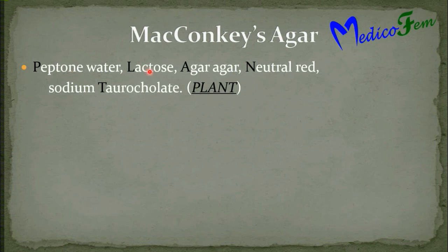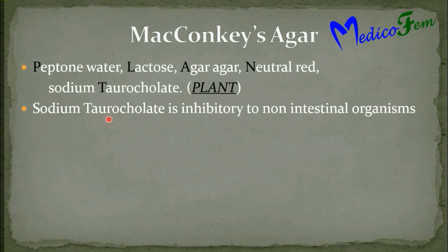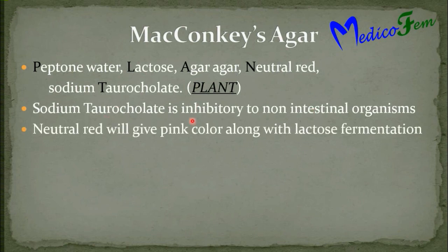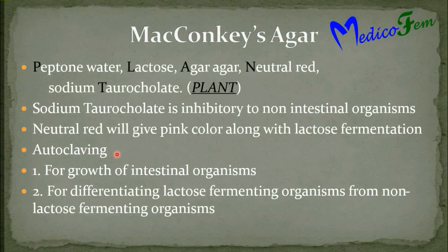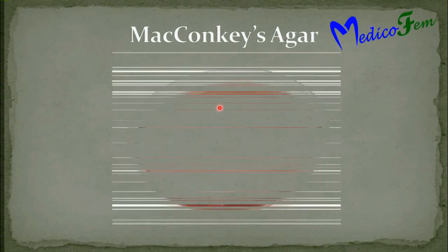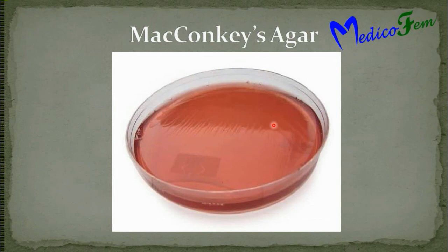MacConkey agar contains peptone water, lactose, agar agar, neutral red as an indicator, and sodium taurocholate. Sodium taurocholate is inhibitory to non-intestinal organisms. Neutral red gives pink color with the fermentation of lactose. It is sterilized by autoclaving. It is used for growth of intestinal organisms and also differentiates lactose-fermenting organisms from non-lactose-fermenting organisms. This is the plate containing MacConkey agar.